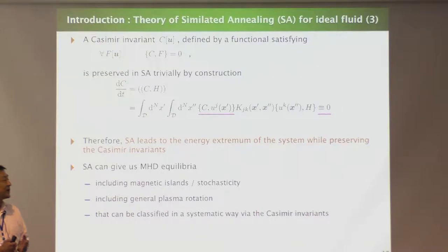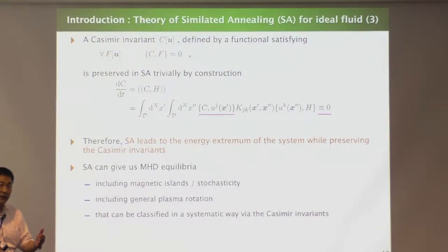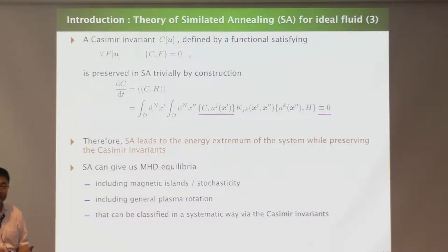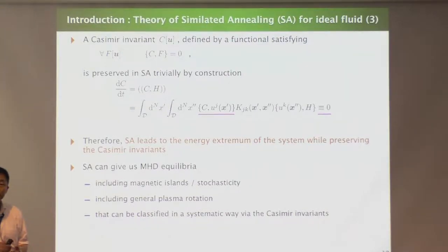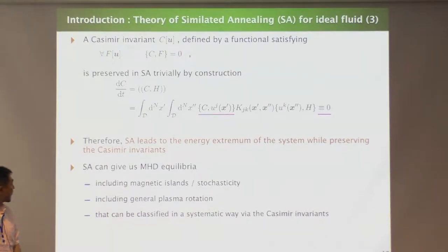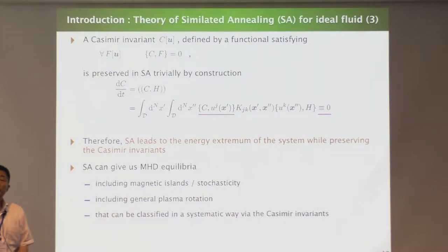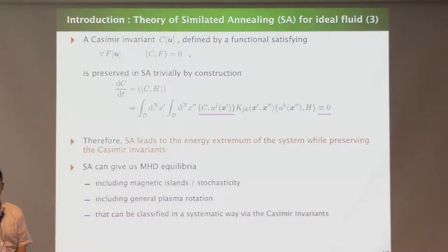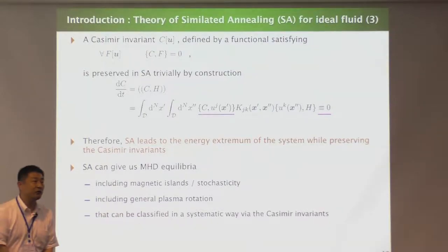The artificial dynamics doesn't assume nested flux surfaces. It can include magnetic islands or even stochasticity, and there is no assumption about plasma rotation or plasma flow. Also, the Casimir invariants can classify the equilibrium in a systematic way, which is theoretically a very good point.